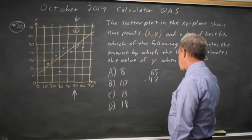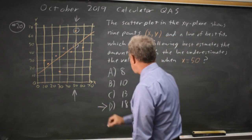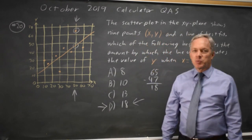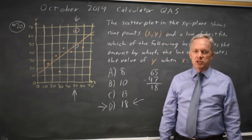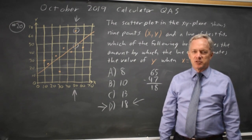And the difference would be 18, which is choice D. The College Board often asks you to interpret a line of best fit, including relative to the observations.